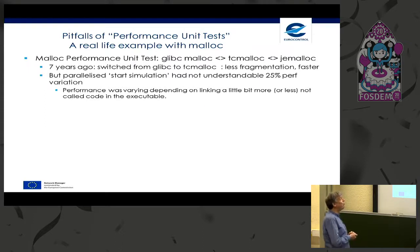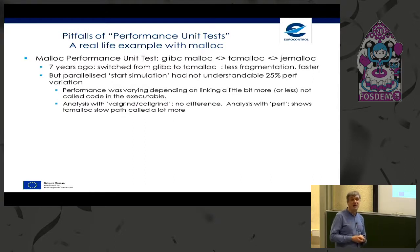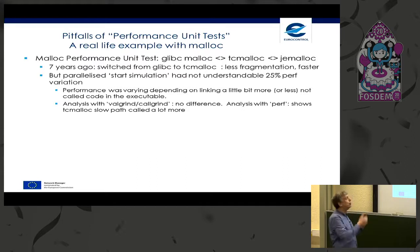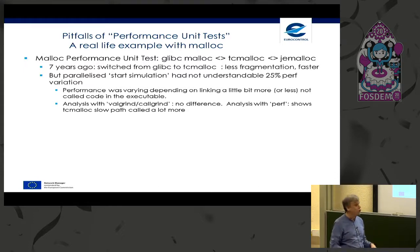The performance difference varied depending on linking slightly more or less code into the executable — even code that was not called. Minimal size changes to the executable were causing differences. We analyzed this using Valgrind Callgrind to see detailed instructions executed, but saw no difference. Using the Linux perf tool, we found that TC malloc's slow path was called a lot more when we had perhaps 10 bytes more or 100 bytes less of uncalled executable code. We couldn't understand this mystery.